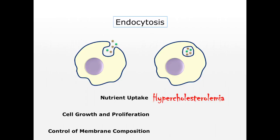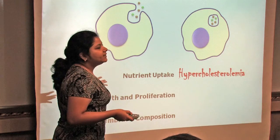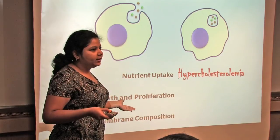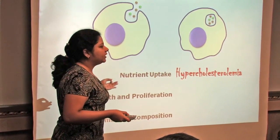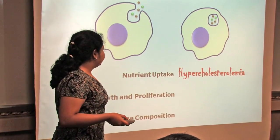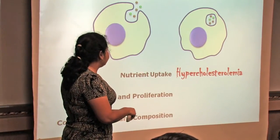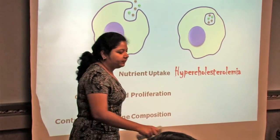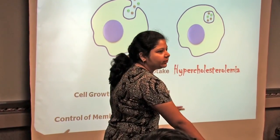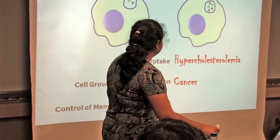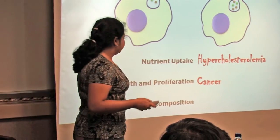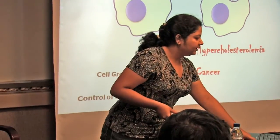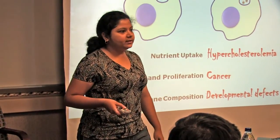When endocytosis occurs normally, the health status of the cell is fine and all cells are healthy. But in some cases, an abnormality can happen. For example, abnormal nutrient uptake might lead to diseases like hypercholesterolemia. If cell growth or proliferation is not normal, it leads to cancer. And if the control of membrane composition is not normal, it leads to several developmental defects.